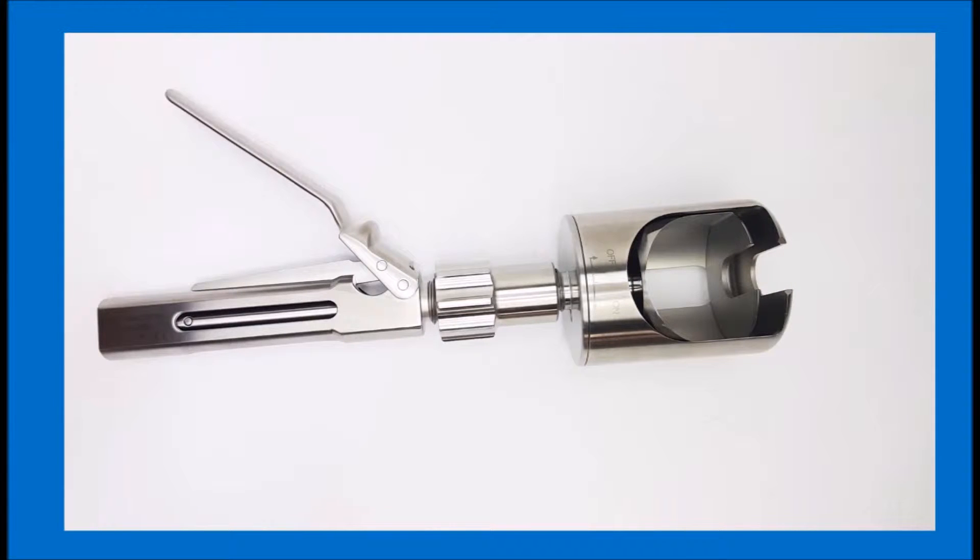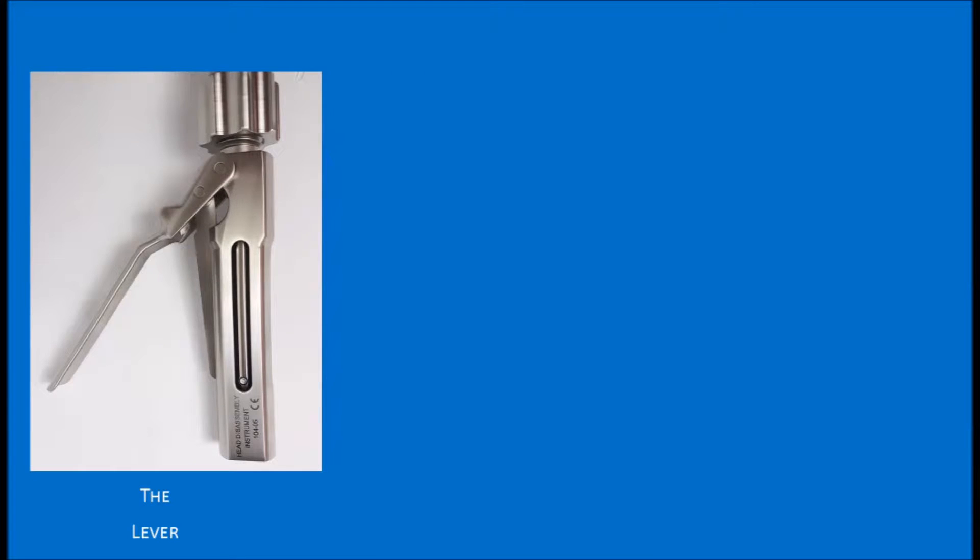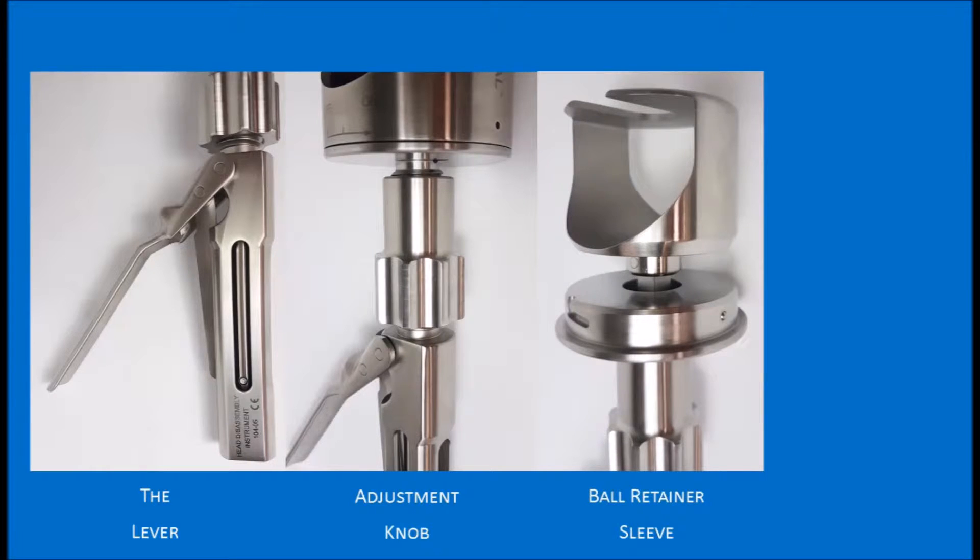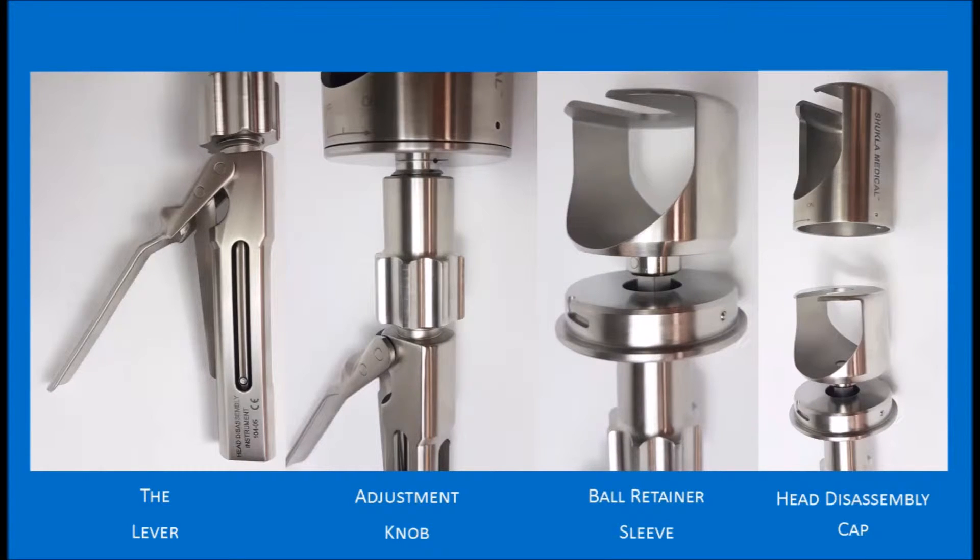We begin by naming its respective parts. The entire device is known as the femoral head disassembly instrument. This is the lever, the adjustment knob, the ball retainer sleeve, and the head disassembly cap.